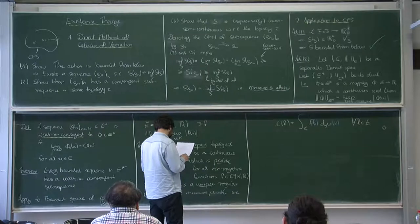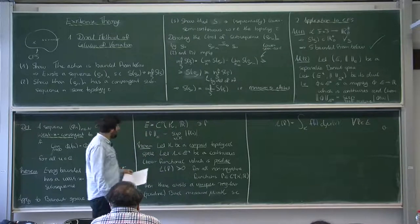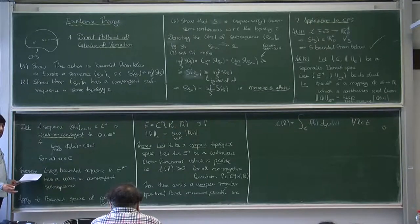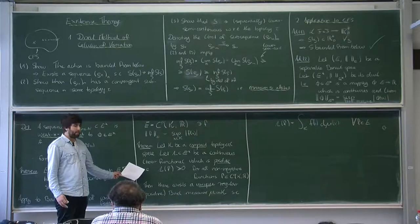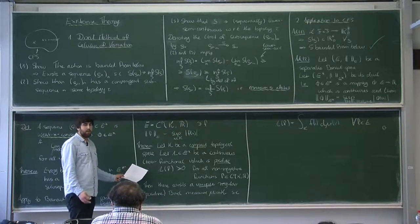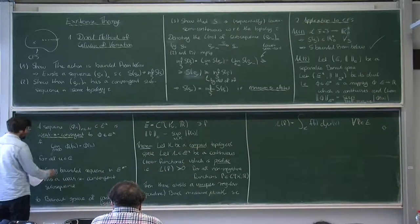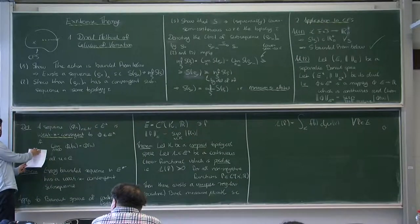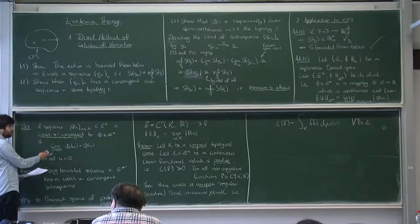Now we can combine those two results. We know from Banach-Alaoglu that a bounded sequence in E* has a convergent subsequence, and the Riesz representation theorem tells us that as long as the sequence consists of positive functionals, each is given by a measure. So this tells us: if we have a bounded sequence of measures, then there's a convergent subsequence in this topology, and it turns out this is just convergence of measures.